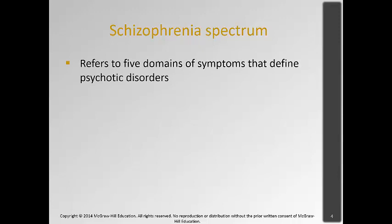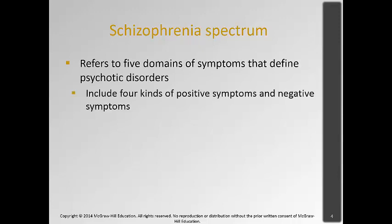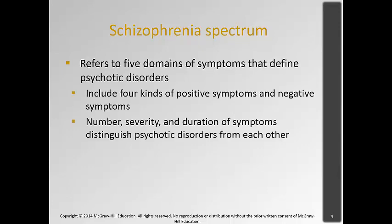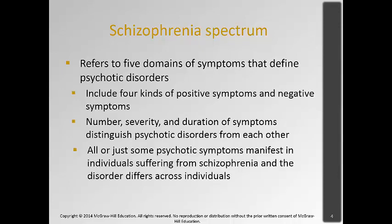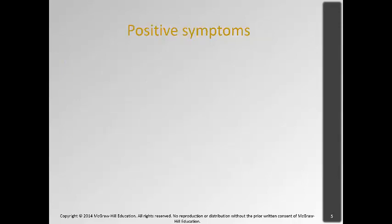The schizophrenia spectrum refers to the five domains of symptoms that define psychotic disorders. They include four kinds of positive symptoms and negative symptoms. The number, severity, and duration of these symptoms distinguish one psychotic disorder from another. Not all, but just some psychotic symptoms may manifest in individuals suffering from schizophrenia, and the disorder differs across individuals.